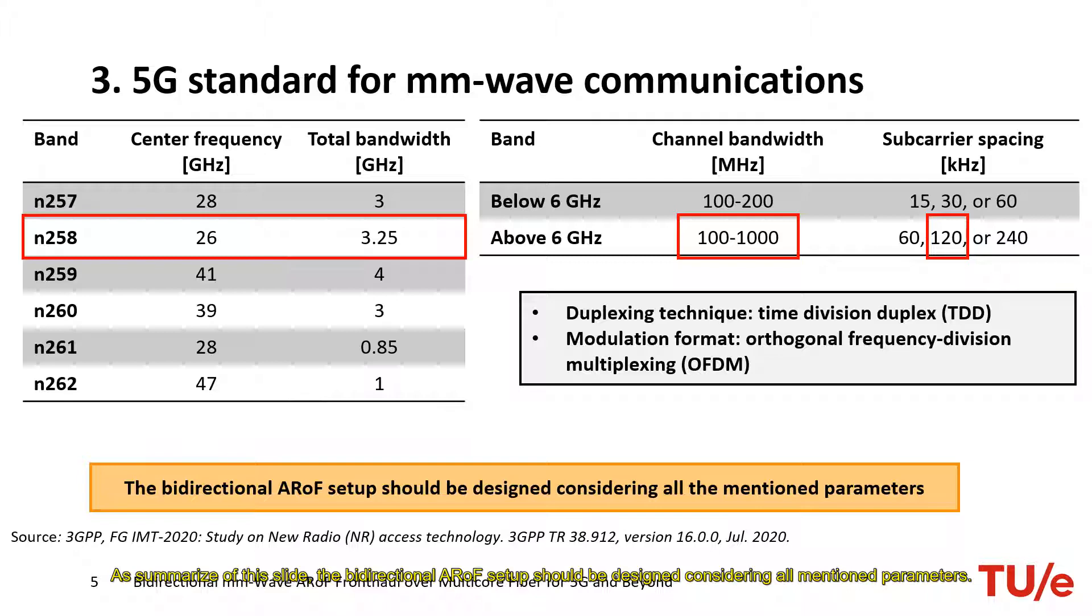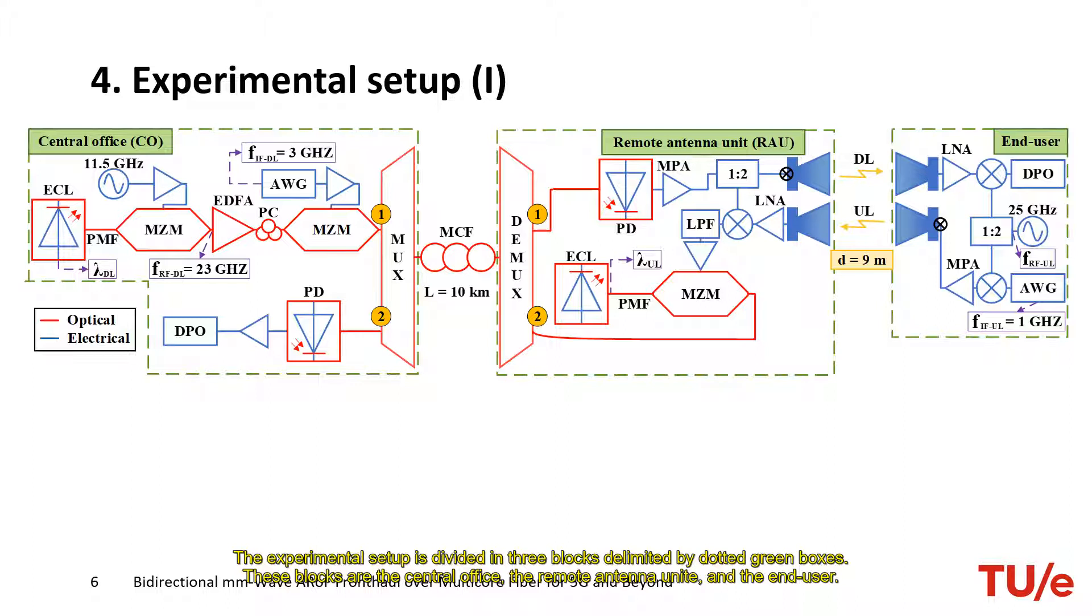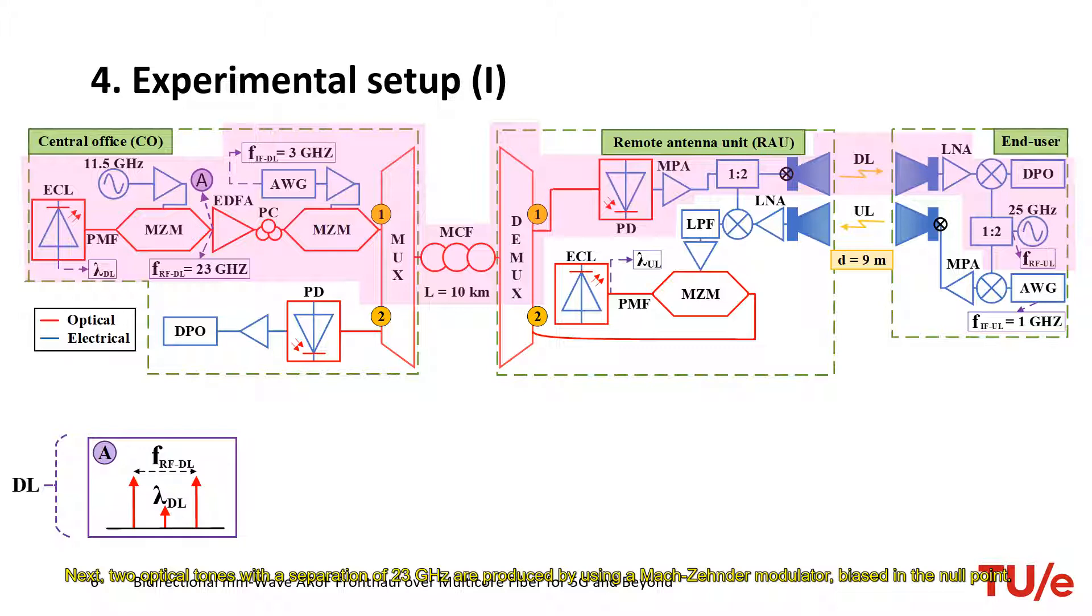This slide shows the experimental demonstration for a bidirectional RoF link oriented towards millimeter wave 5G communication. The experimental setup is divided in three blocks delimited by dotted green boxes. These blocks are the central office, the remote antenna unit, and the end user. The components involved in the downlink part of the setup are bounded in this magenta box. First, an external cavity laser or ECL generates an optical carrier. Next, two optical tones with a separation of 23 GHz are produced by using a Mach-Zehnder modulator biased in the null point. These two optical tones are boosted with an erbium-doped fiber amplifier.